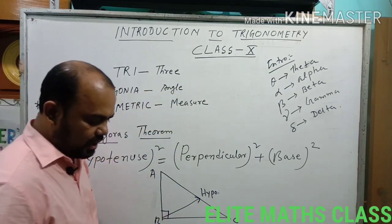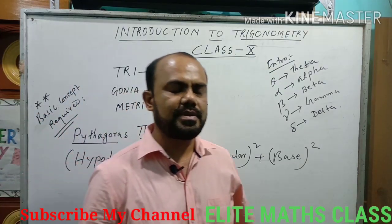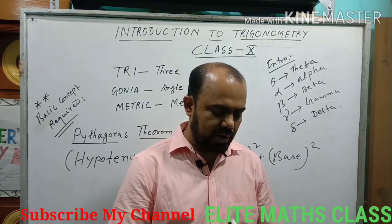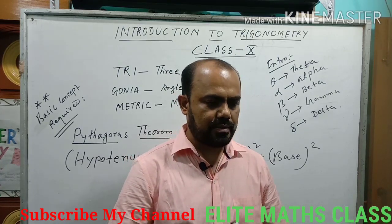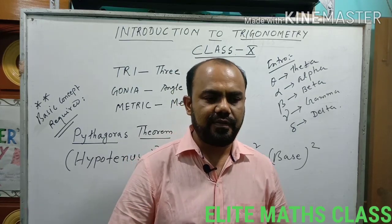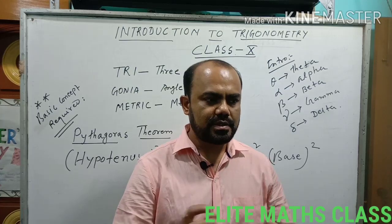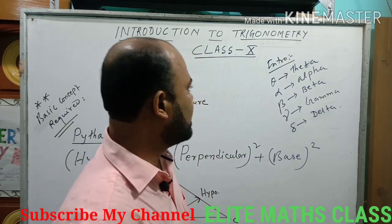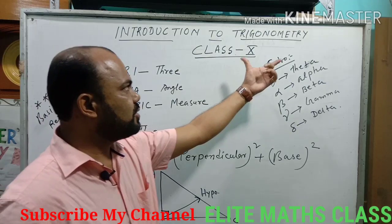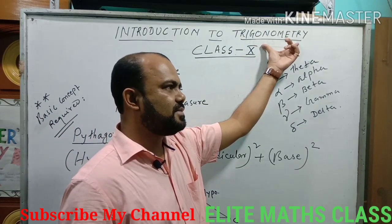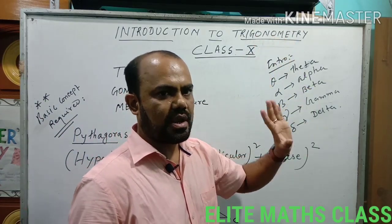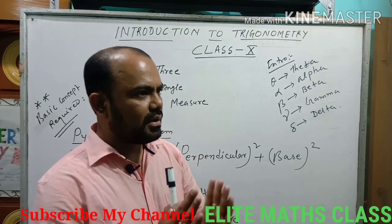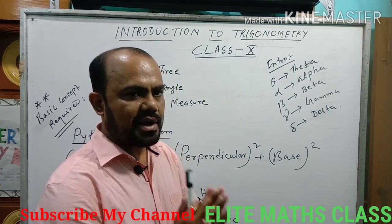In class 9 syllabus, geometry is there. In geometry, what is the plane figure consisting of 3 angles? Definitely it is a triangle. So all the Trigonometry concepts are based on a triangle, and particularly it is related to the right angle triangle.